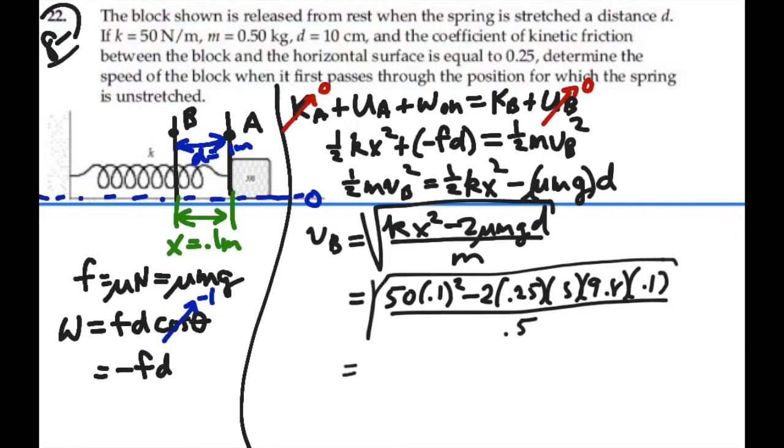And what does that give us? It's the square root of 0.51, which equals 0.714 meters per second.